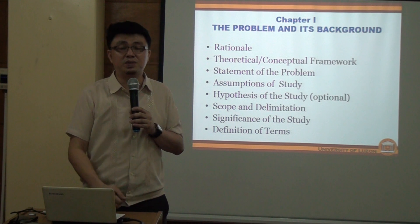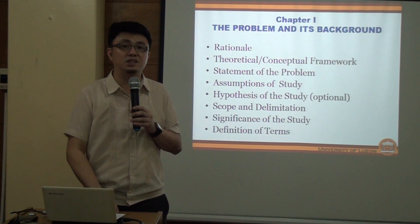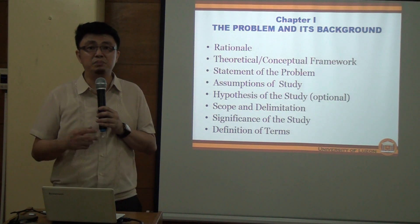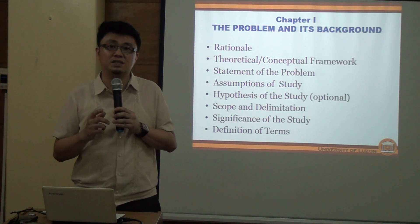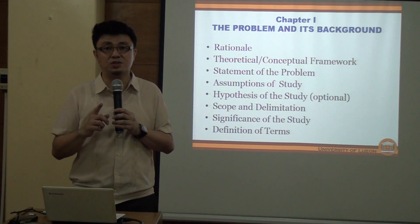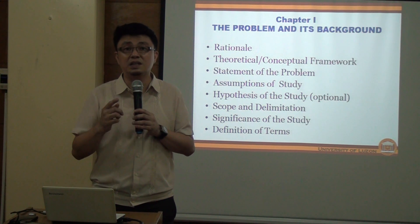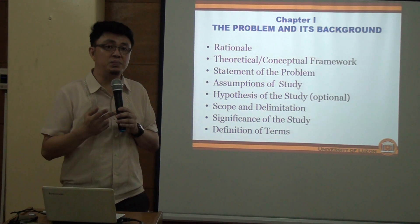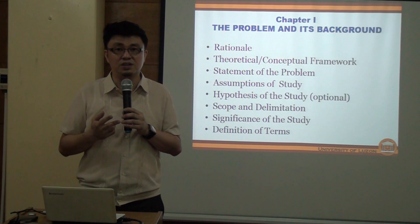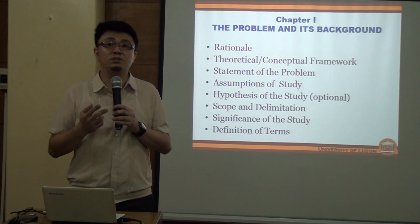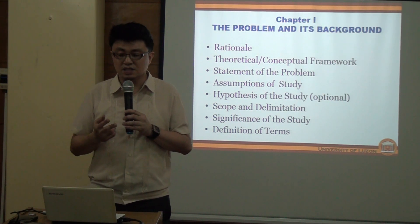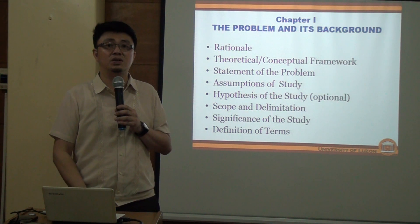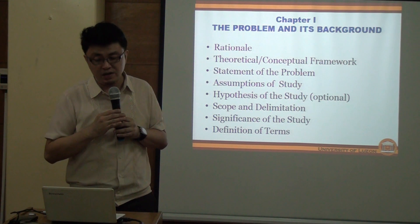The second chapter is the Review of Related Literature and Studies, divided into two parts. The first is conceptual literature, also known as related literature. The second is research literature, also known as related studies. These are the two parts of the second chapter of the UL prescribed report.